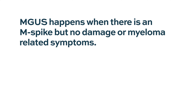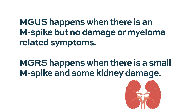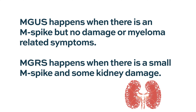They have good hemoglobin, usually good bones with no pains. But then you look at a subset of patients that have this kind of small M-spike — it's not enough to call it myeloma, but they do have kidney damage. It's a very evolving area; this was a recent definition.